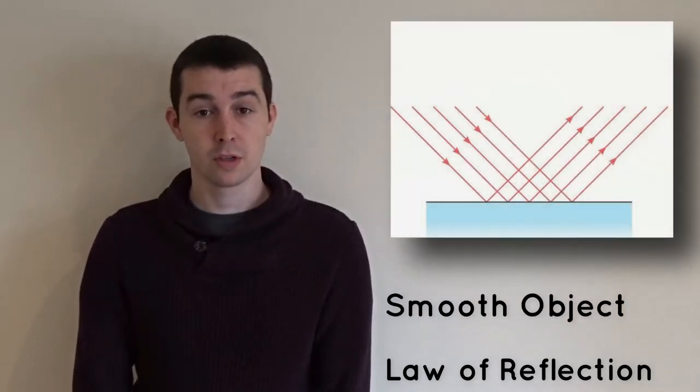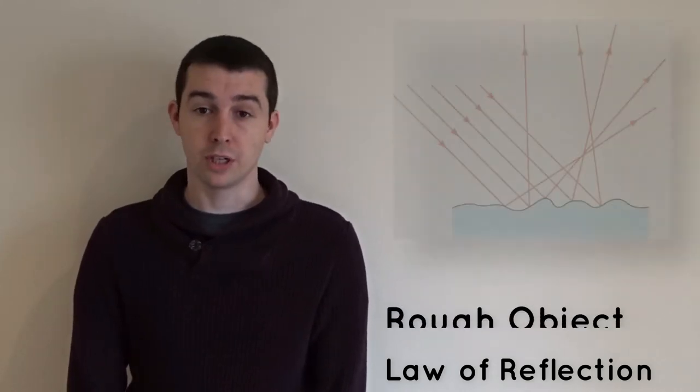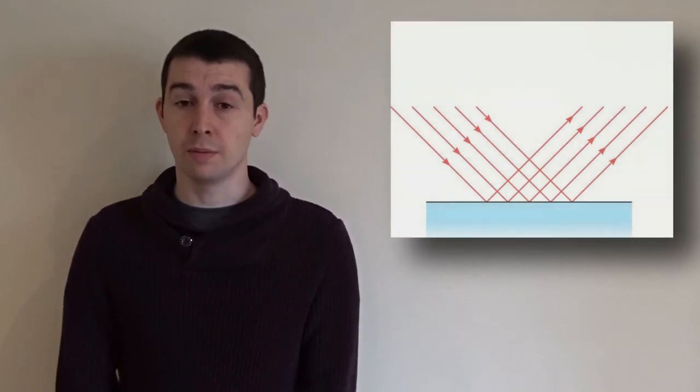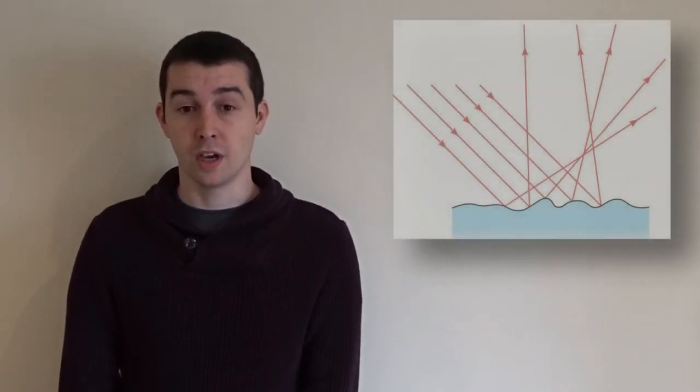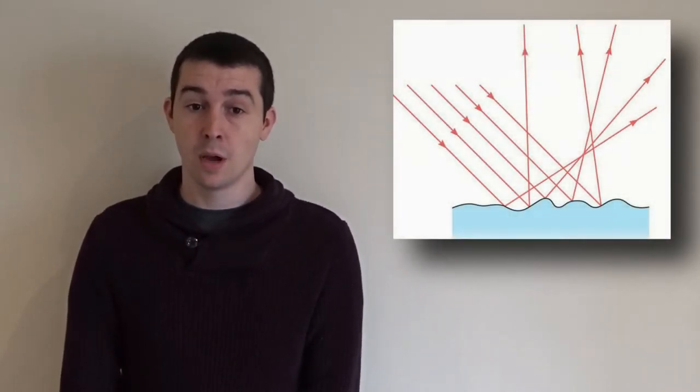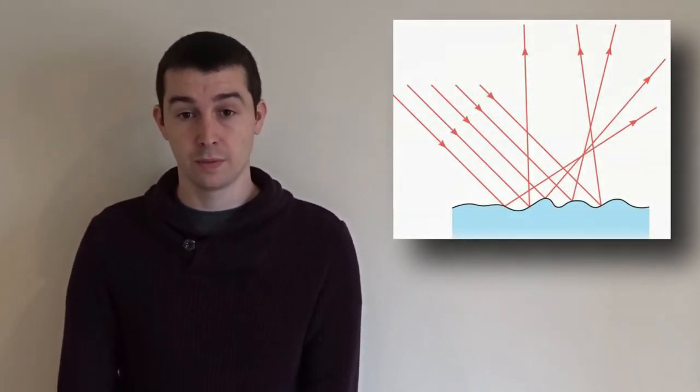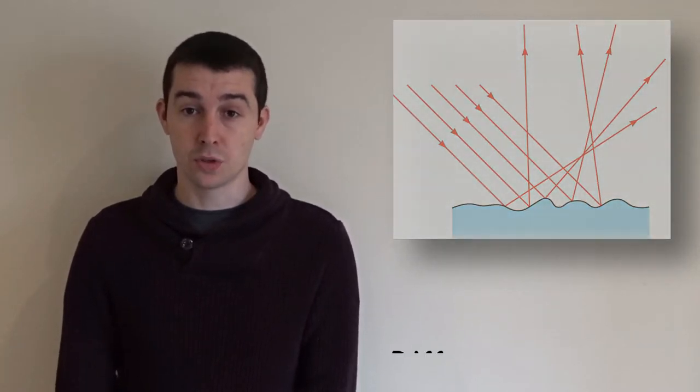Light rays obey the law of reflection whether they strike a smooth object, such as a mirror, or a rough object, such as a piece of paper. When light rays strike a smooth surface, the rays are reflected off the object parallel to each other, which allows an image to be formed — this is known as specular reflection. When light rays strike a rough surface, the rays are scattered or reflected at many different angles, preventing the formation of an image — this is known as diffuse reflection.